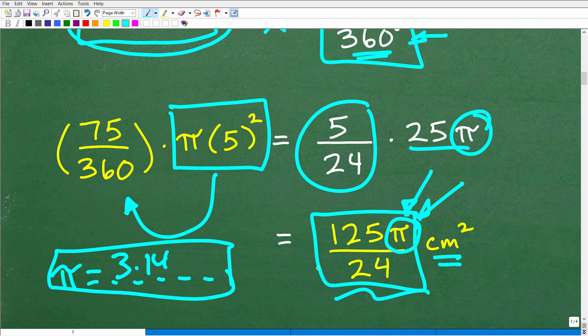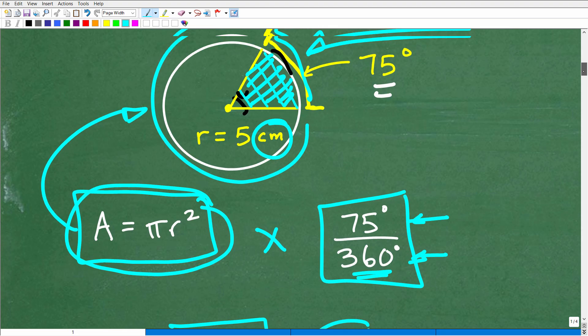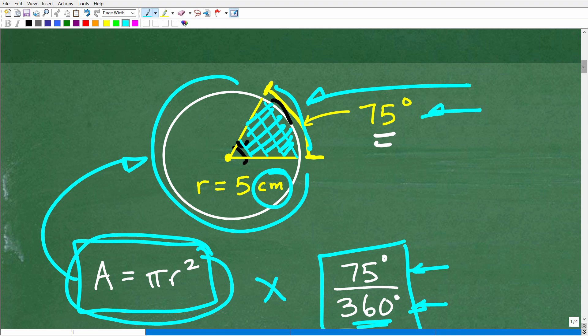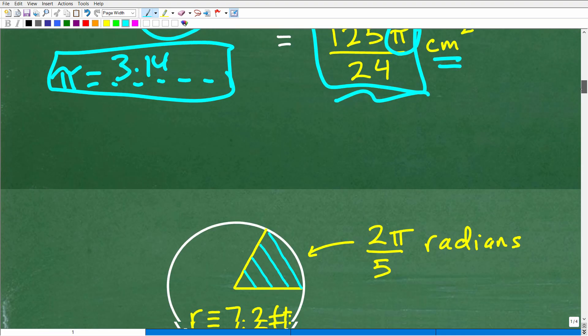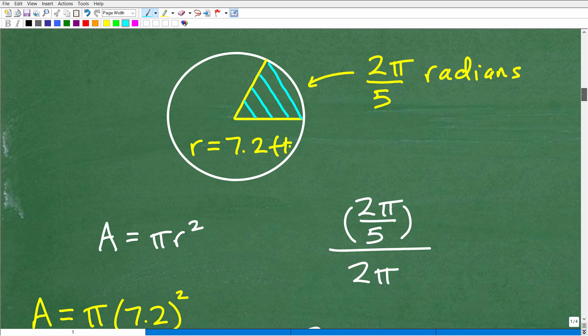And of course, we can change that π out for 3.14 and get a rough estimate of the answer. So basically, this is how you do this problem. But this is an easy problem because we're dealing with degrees. So now let's get into the actual problem and talk about radians.